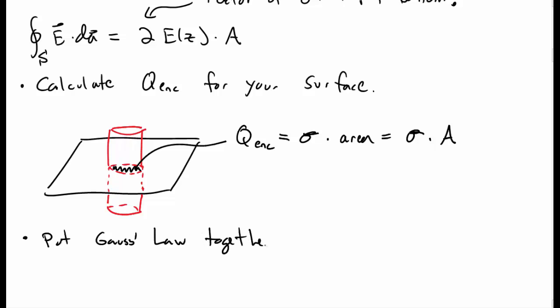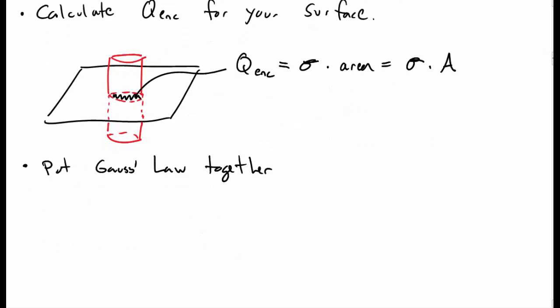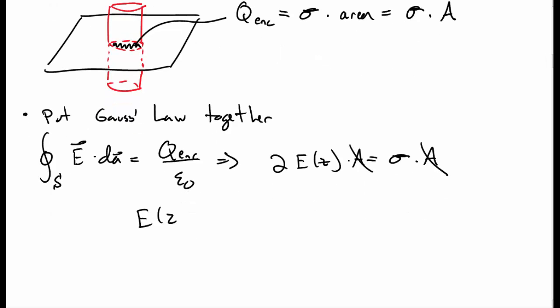Okay, so now we can put Gauss's law together, the two halves of Gauss's law together. The flux of the electric field through the Gaussian surface equal to the charge enclosed over epsilon naught. And so that's 2E times A equal to sigma times A. The A's cancel. And well, there's an epsilon naught here. So you have sigma over 2 epsilon naught.